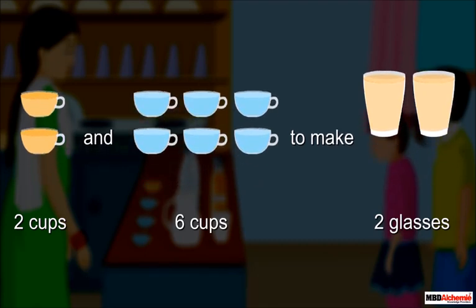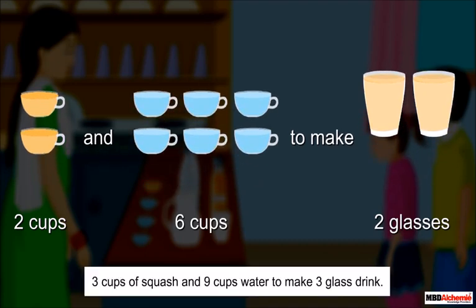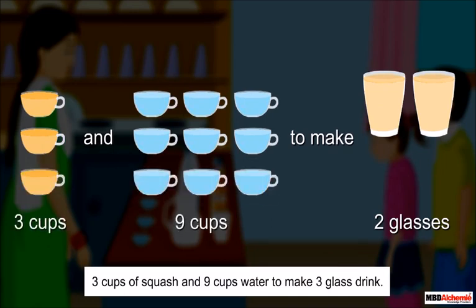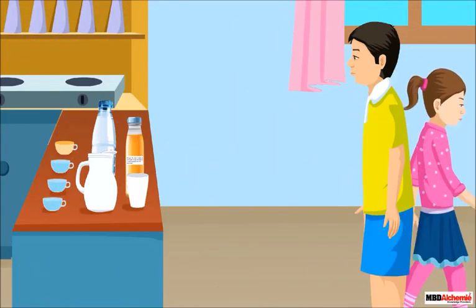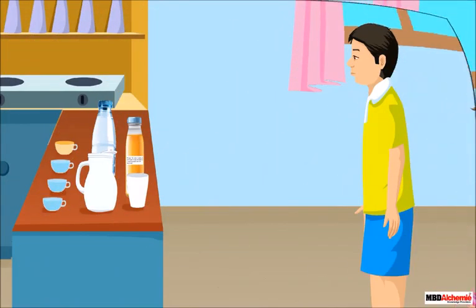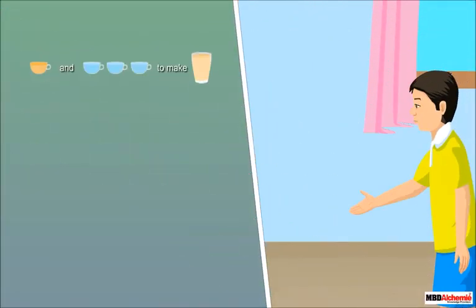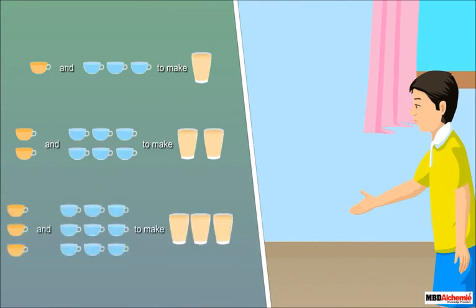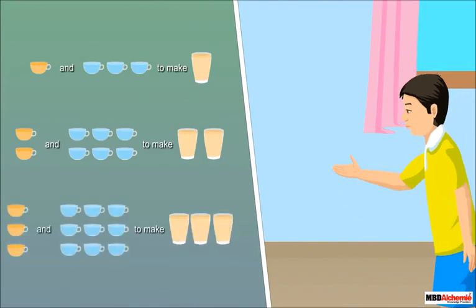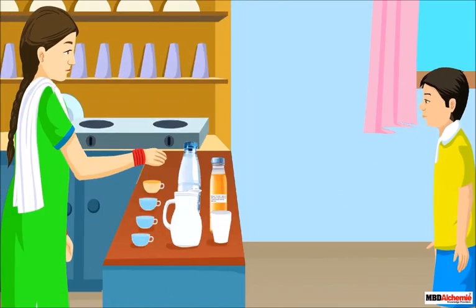If we have to make it for three persons, then we take three cups of squash and nine cups of water. Here the quantity of water we have added is three times the quantity of squash. How did you find that out?